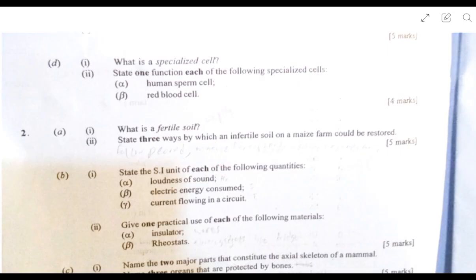What's a fertile soil? Fertile soil contains the necessary nutrients and can support plant growth. State three ways by which an infertile soil on a maize farm could be restored. They just add things like this to make it more practical. We see more of this in other questions. So: fallow period, green manuring, and composting.